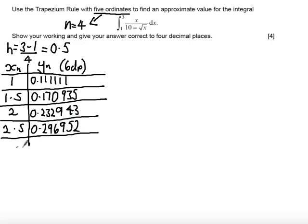And then add 0.5 one final time, so we get that the last ordinate is 3.